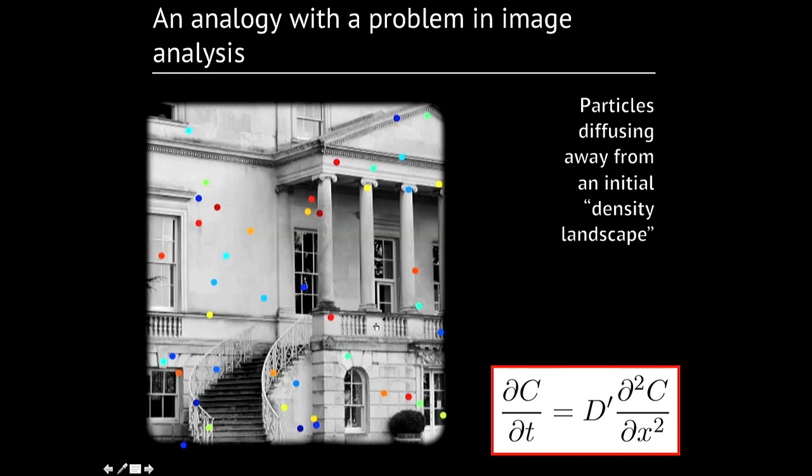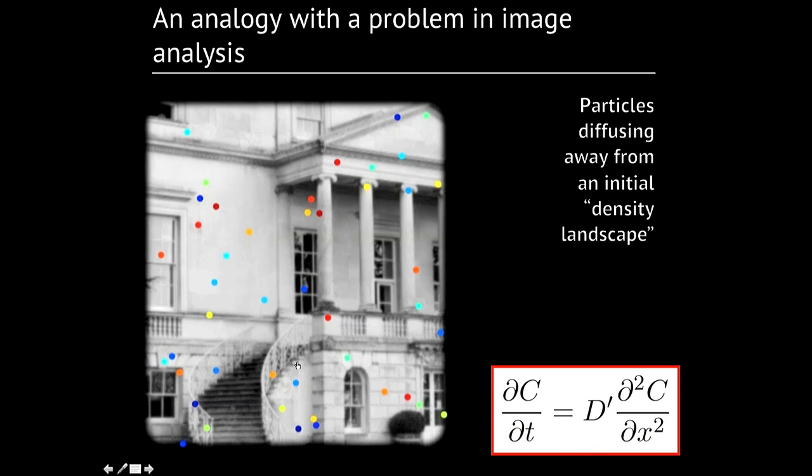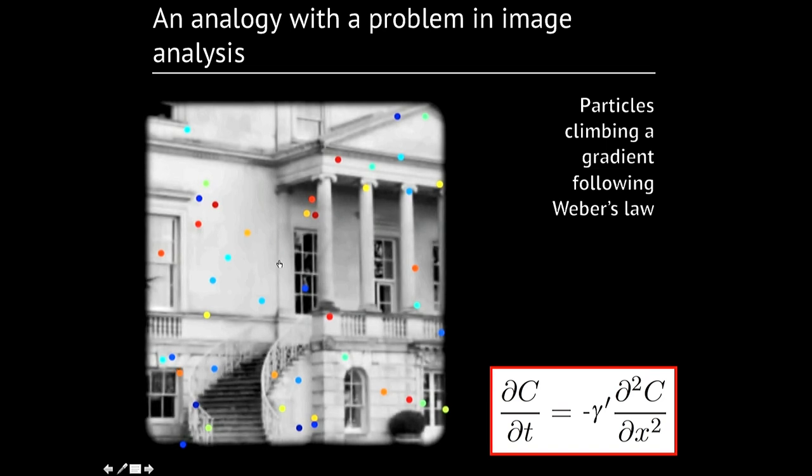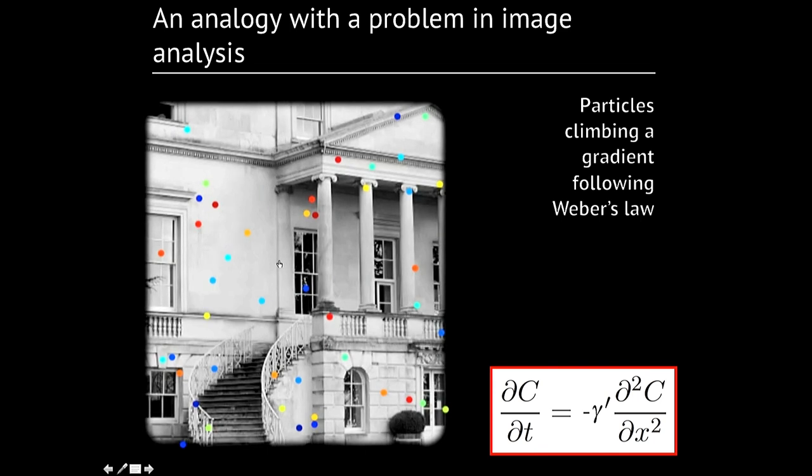This is some problem that is analogous to something that is known in image analysis. You can imagine that the same problem exactly in which an image is the density distribution where bright areas are high density regions and dark areas are low density regions. When you blur the image, you just move around these brightness levels and you obtain a blurred image. If then you just adopt this strategy of moving up the gradient based on Weber's law, what you end up doing is that you can restore something very similar to the original spatial distribution.